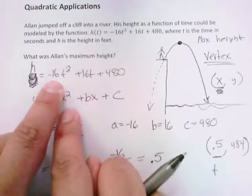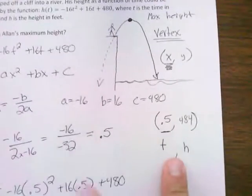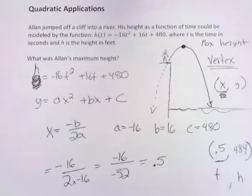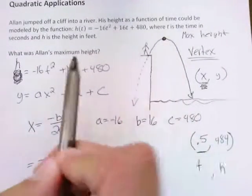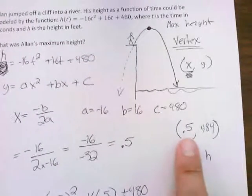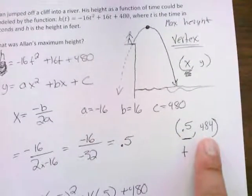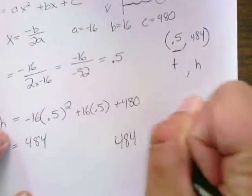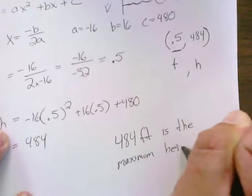So it looked like t was in the x spot and h is in the y spot. So I know t is 0.5, h is 484. So let's go back to the question here. It says, what was Allan's maximum height? So we wouldn't report this entire vertex. Yes, we are interested in the vertex because that's where the maximum is. We just care about the height only. So looking at the coordinates of my vertex, 0.5 is time, so it looks like 0.5 seconds. And my height is 484, which is feet. So the answer to this problem is just 484 feet is the maximum height.